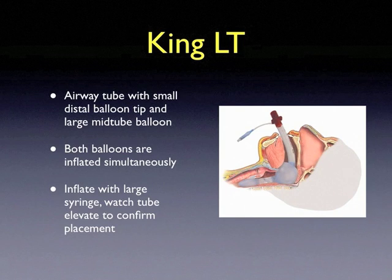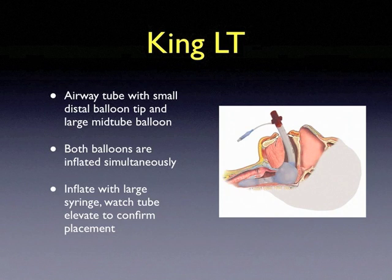The King LT is another extraglottic device placed blindly. The tube is passed into the proximal esophagus. The King LT has two balloons inflated simultaneously with a single cuff — inflate with a large syringe and watch the tube elevate toward the ceiling to confirm placement. Between the balloons, there are ports that allow for passive ventilation.